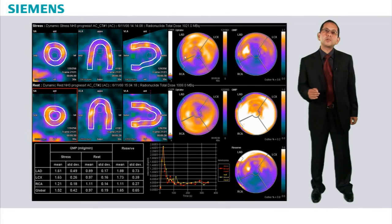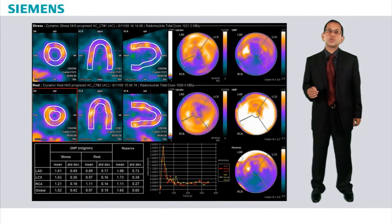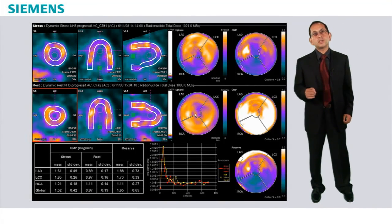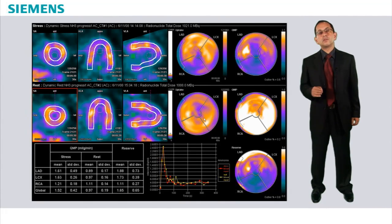Now we can look at the stress and rest uptake polar plots which show a very large inferior wall defect with significant improvement of uptake in the resting study, suggesting reversible ischemia in the right coronary artery territory.